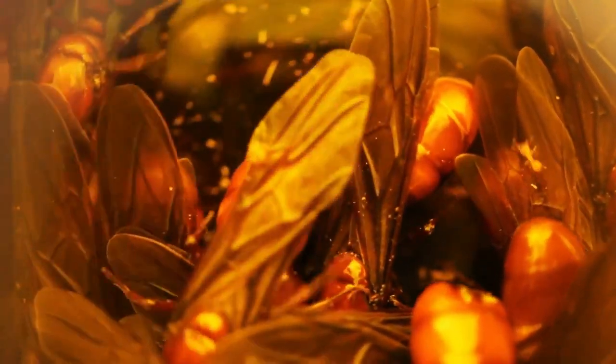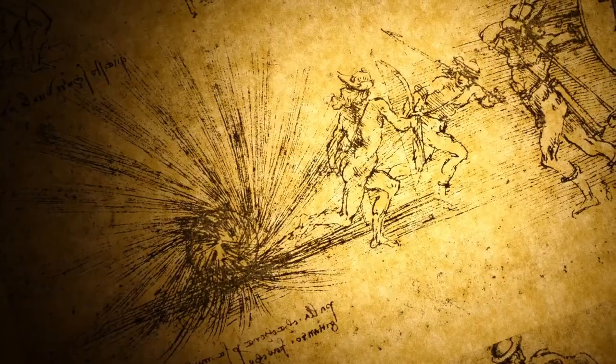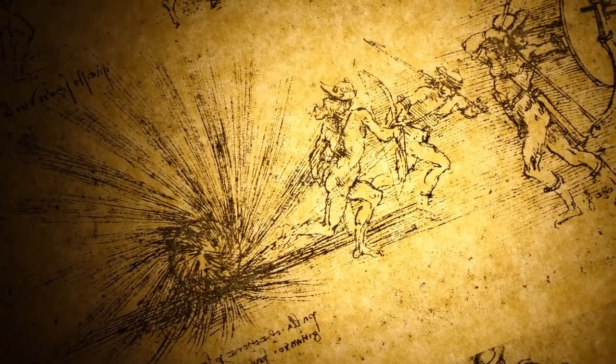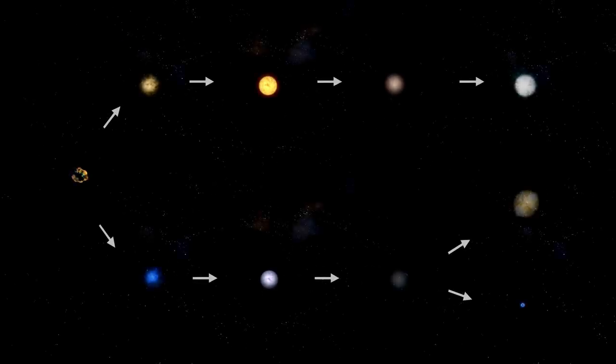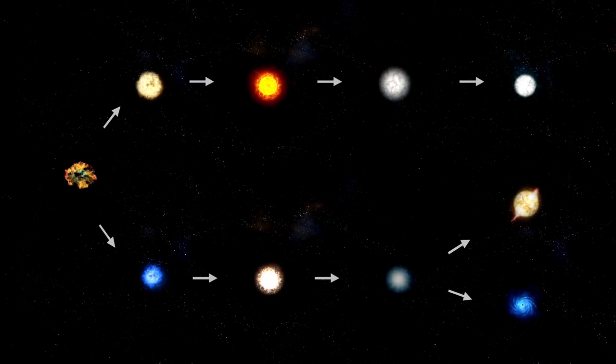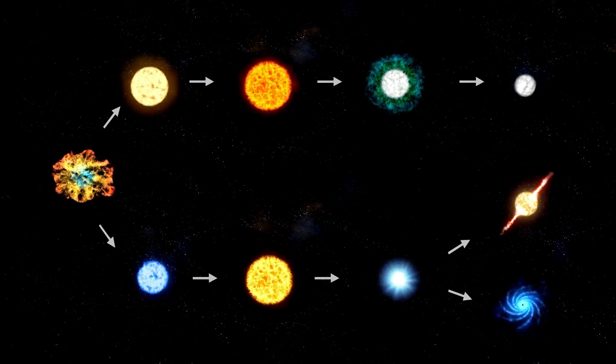The surprising thing is that Betelgeuse is not as unique as one might think. While there are not many stars like it, there are some that share certain similarities and are equally fascinating. One of Betelgeuse's cosmic cousins is Antares, a red supergiant located in the constellation Scorpius.